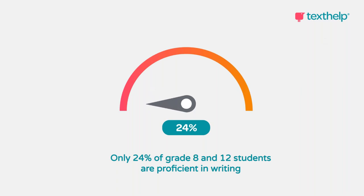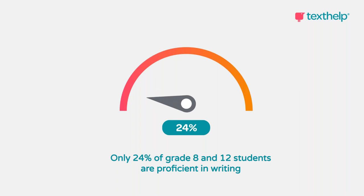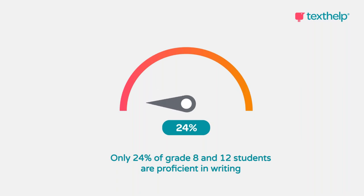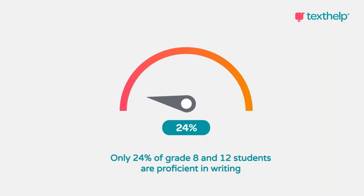Only 24% of grade eight and 12 students are proficient in writing. These stats come from the nation's report card, which tracks the results of an assessment called the National Assessment of Educational Progress, which students take in grades four, eight, and 12 throughout the country. The results of this test give us a pretty good idea of where students are at, both at the state level as well as the national level. It's clear that there's really a universal struggle among students when it comes to writing, and in particular now during distance learning, there are probably even more challenges that students are facing.